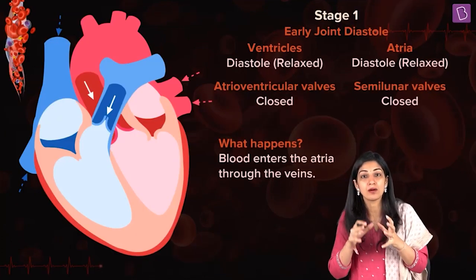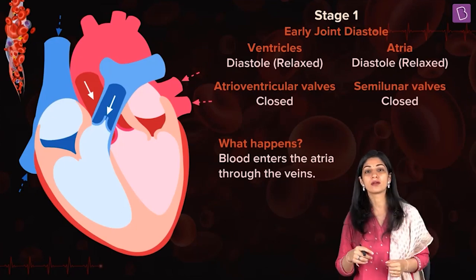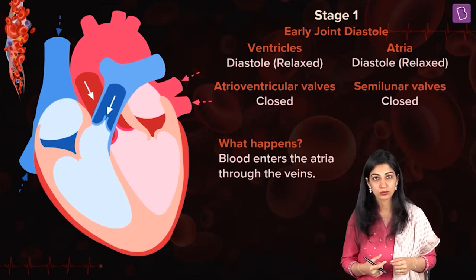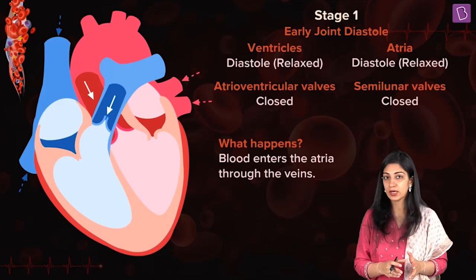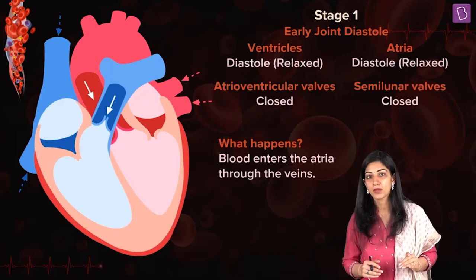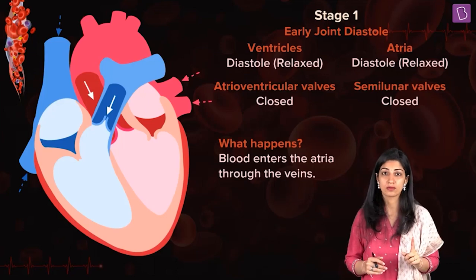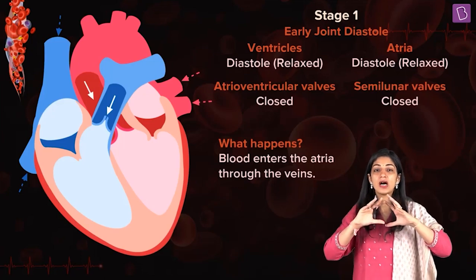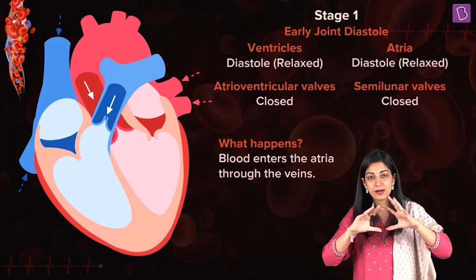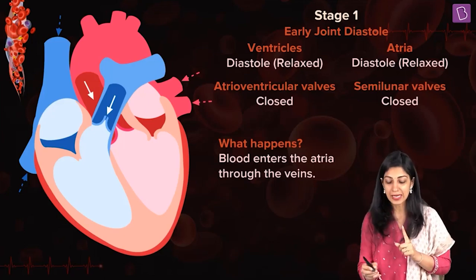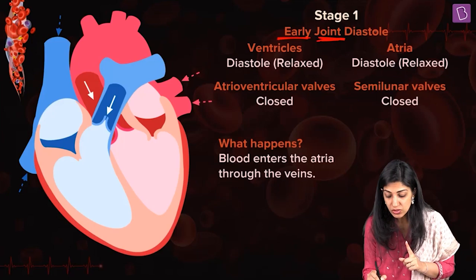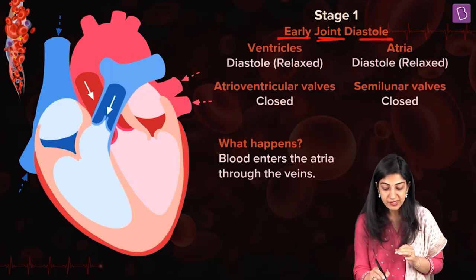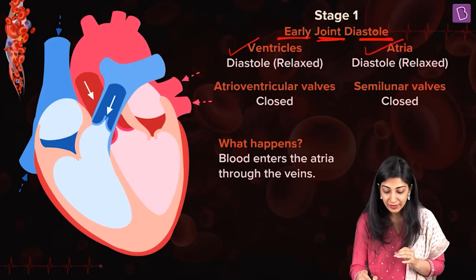Systole, diastole — this rhythm is what we are going to discuss now. Like in a dance sequence, you take a certain step at one and a certain step at two. You know the structure of the heart — the atria and the ventricles. Stage one: we assume the heart is in a relaxed state, the heart muscle is not contracting, and that is called early joint diastole.